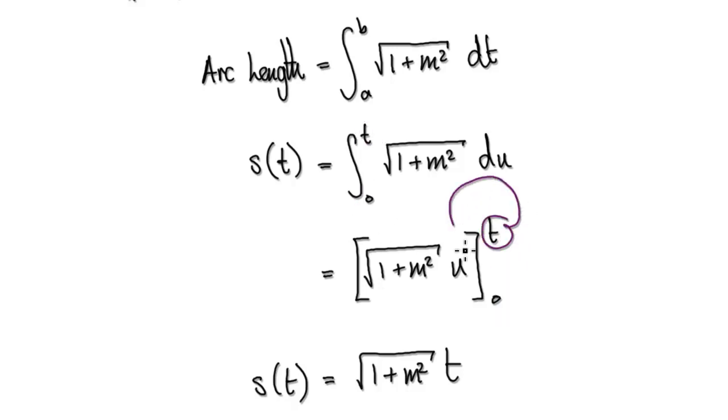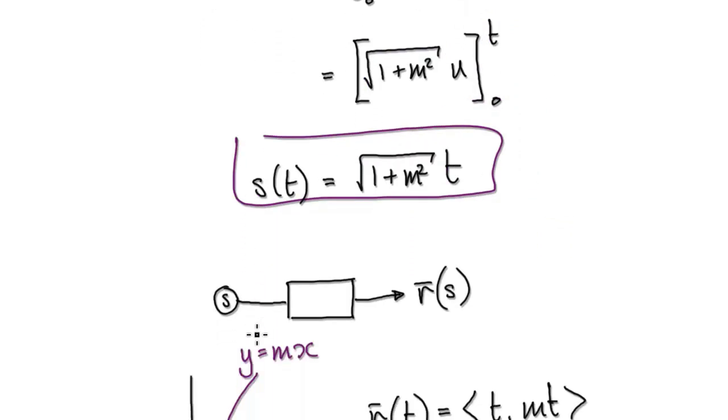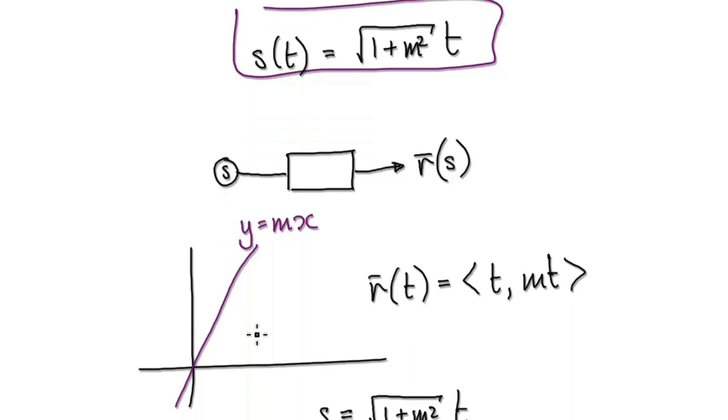Now put this t into here, that will give us this. Take away, put the 0 into here, then the whole thing will be 0. So that will give us this. So what that means is, what this means is, given a time,